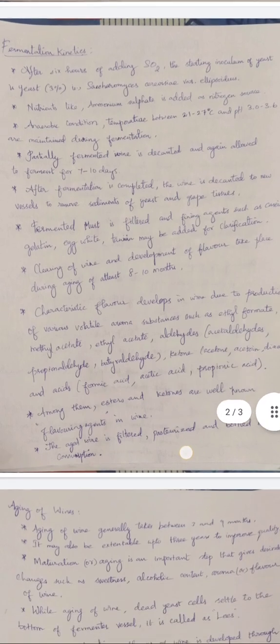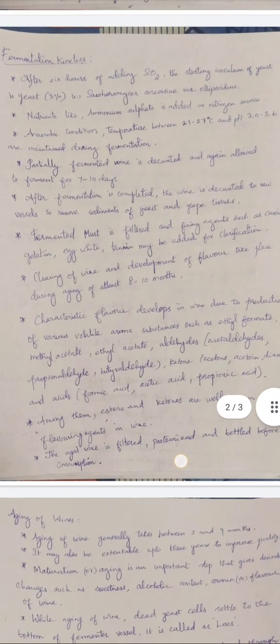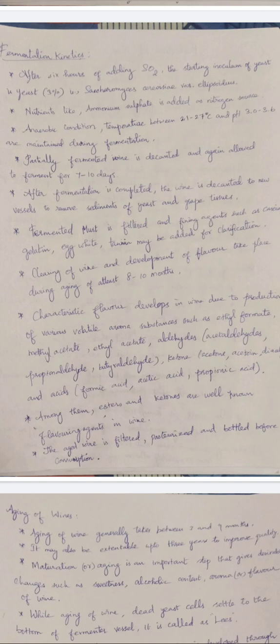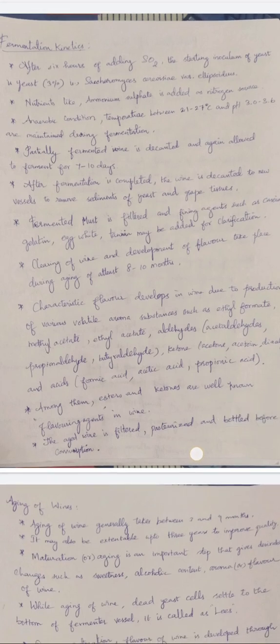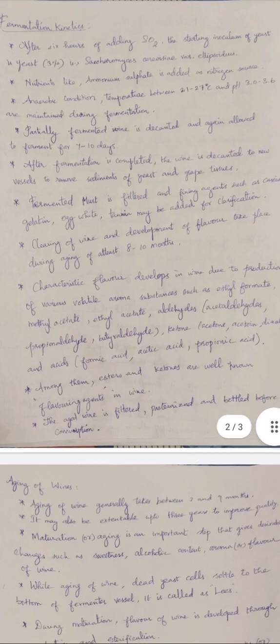Anaerobic conditions are maintained within the closed vessel, and a temperature between 21 to 25°C is maintained for yeast multiplication. The ideal pH in the production medium is 3 to 3.6, which is also maintained in the fermentation vessel. Sometimes partially fermented wine, which imparts a sour flavor, is discarded and fermentation is restarted by addition of fresh brewer's yeast for about seven to ten days.